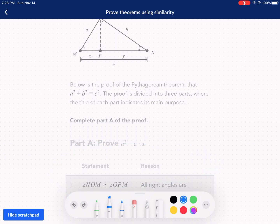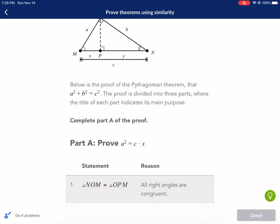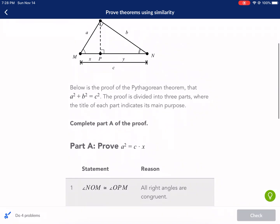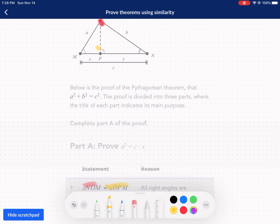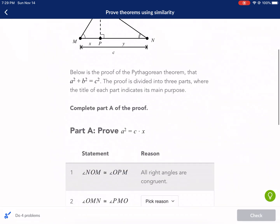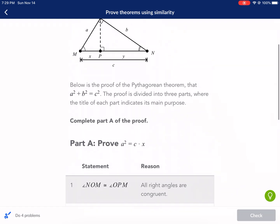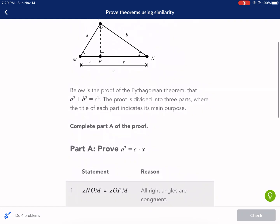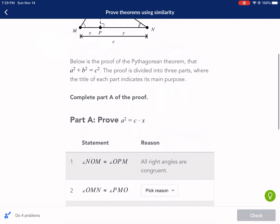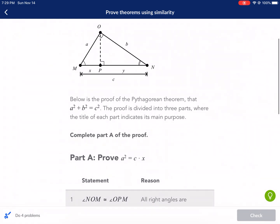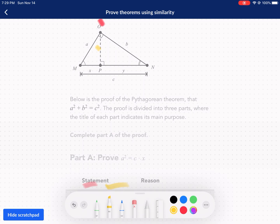I'm just going to jump right to number one. Angle NOM is congruent to OPM. All right angles are congruent. So let's identify this first. We have NOM, that is that right angle right there. And then we have OPM. Let me just see. Yes, it is. So then we have those two angles are congruent, both right angles. So that's our first given.